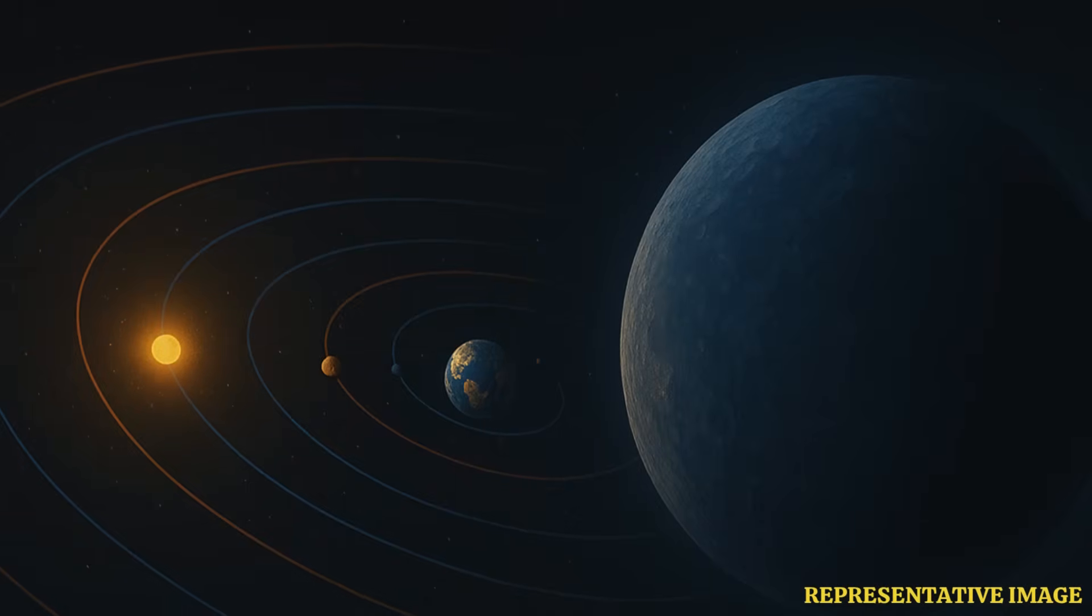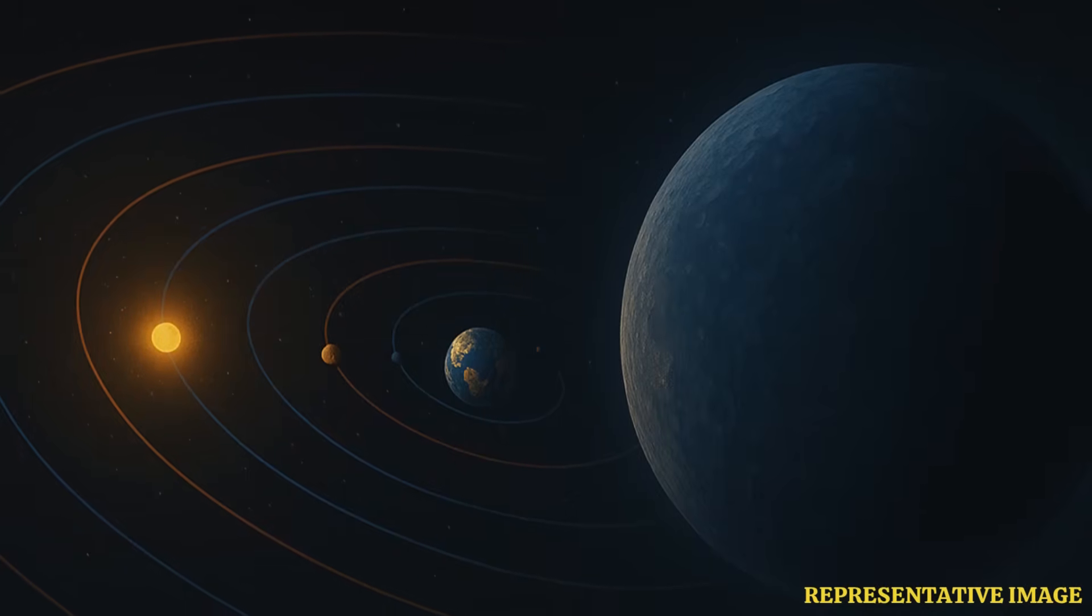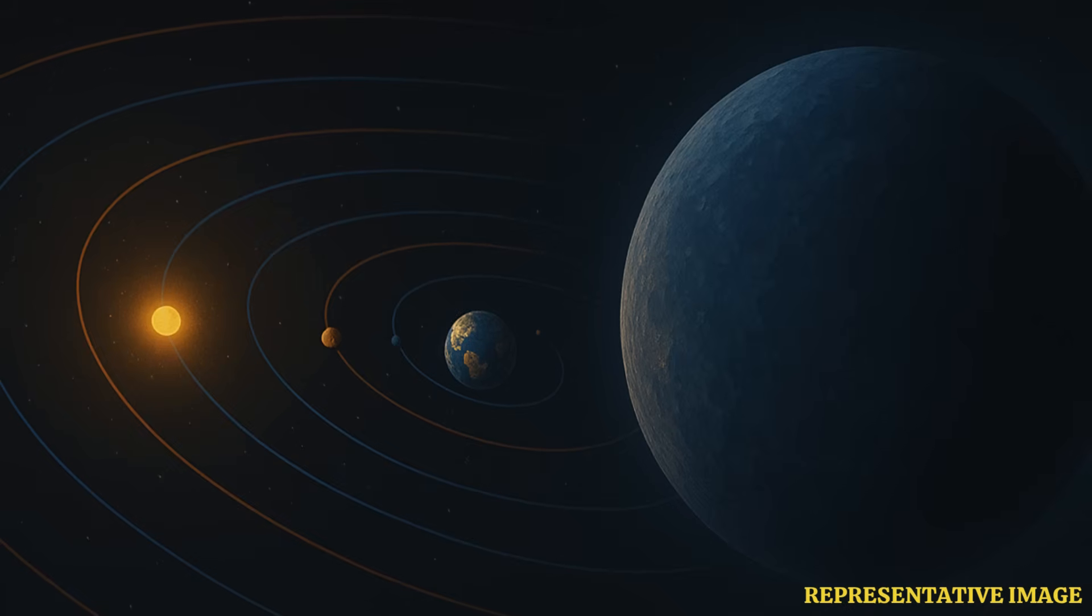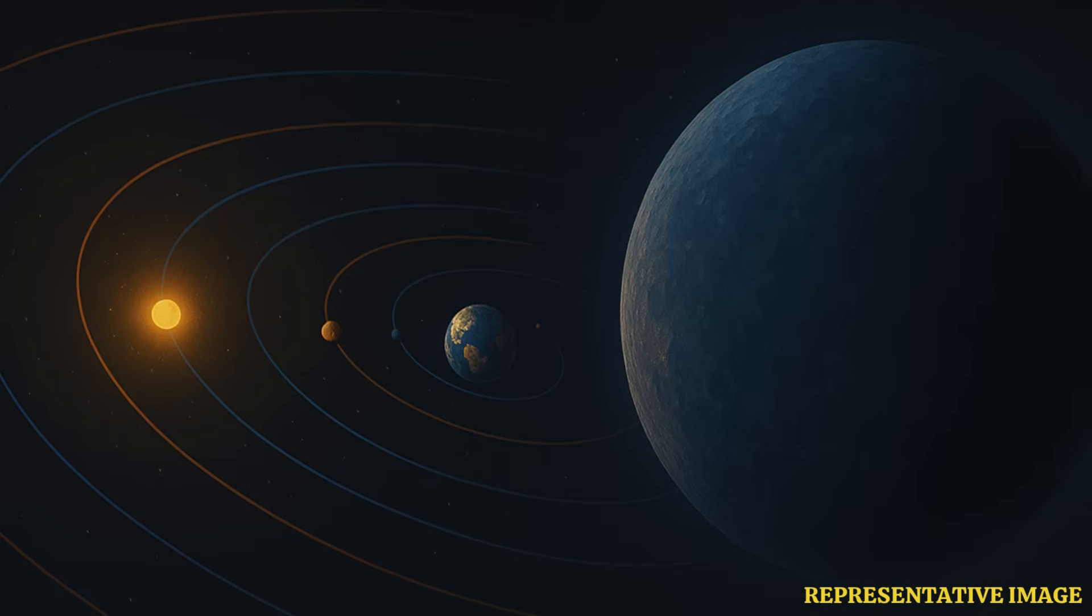Meanwhile, an astronomer at MIT, Milena Rice, said, if a Neptune-sized planet existed in our own Oort cloud, there's a good chance that we wouldn't have found it yet.